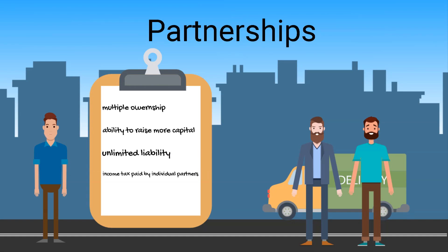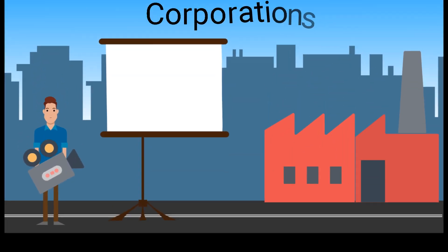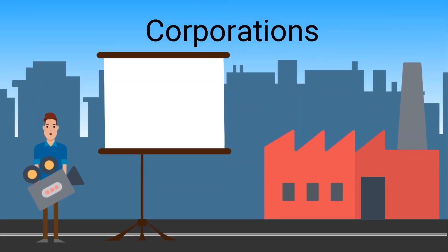Income tax is paid by the individual owners. A corporation is a separate legal entity recognized by the government and taxed on its own income. Individual shareholders pay separate tax on their dividends, or capital gains tax when their shares are sold.